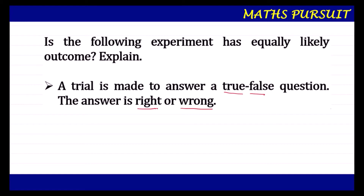We very well know that the probability of an event plus the probability of not that event is equal to one. Here, as two things are involved, the probability of right could be one by two and the probability of wrong is also one by two. We do not know — we might get a right or we might get a wrong. When we add these, we will get one.